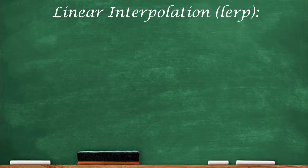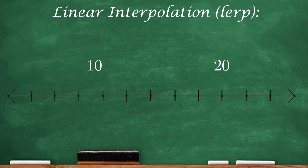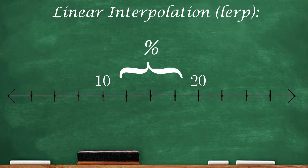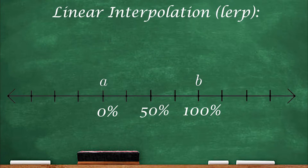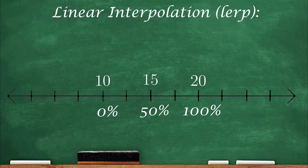We're going to start by interpolating between two numbers. Let's say I have an initial value of 10 and a final value of 20. The way we find our in-between values is by defining some percentage of this number range — using 10 as our lowest value at 0%, and 20 as our highest value at 100%. This way, 50% will always be the number exactly halfway between the two, which in this case is 15.